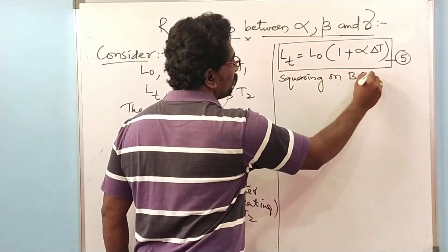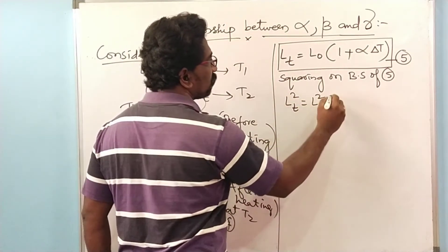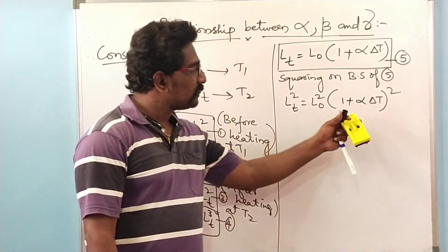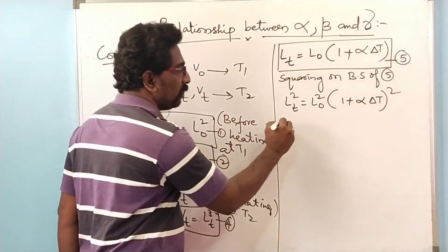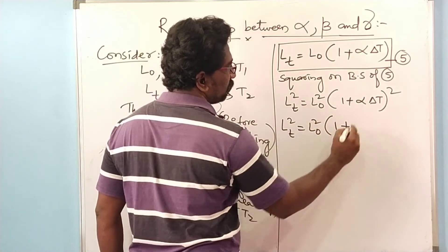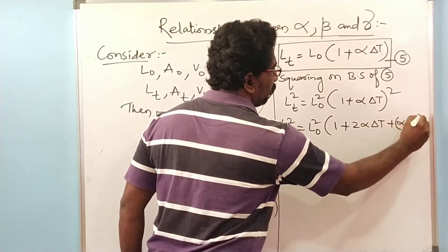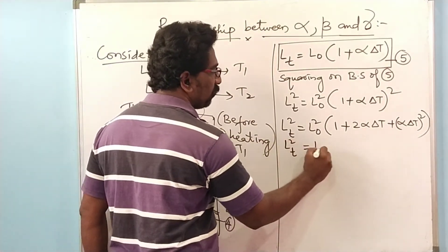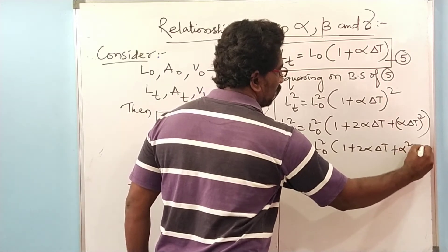Squaring both sides of equation 5 gives L-T squared equals L-naught squared times (1 + alpha delta T) whole squared. This is in the form of the (A + B)² formula. Applying that formula, it becomes L-naught squared times (1 + 2 alpha delta T + alpha squared delta T squared).